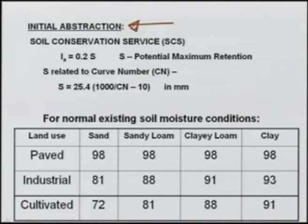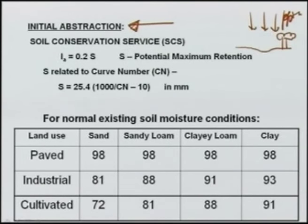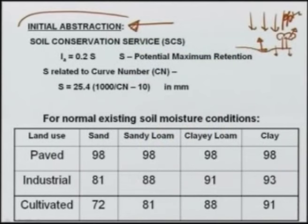We have looked at some equations and today we will look at numerical examples to understand them better. Let us start with the initial abstraction — when precipitation occurs, there would be small depressions on the surface for storage, and some water on tree leaves. These may either evaporate directly from the surface or some of it will infiltrate. The initial abstraction is what occurs immediately after the rainfall, and without satisfying it, we will not have runoff. After that, the rest will go as runoff or part of it will infiltrate and evaporate.